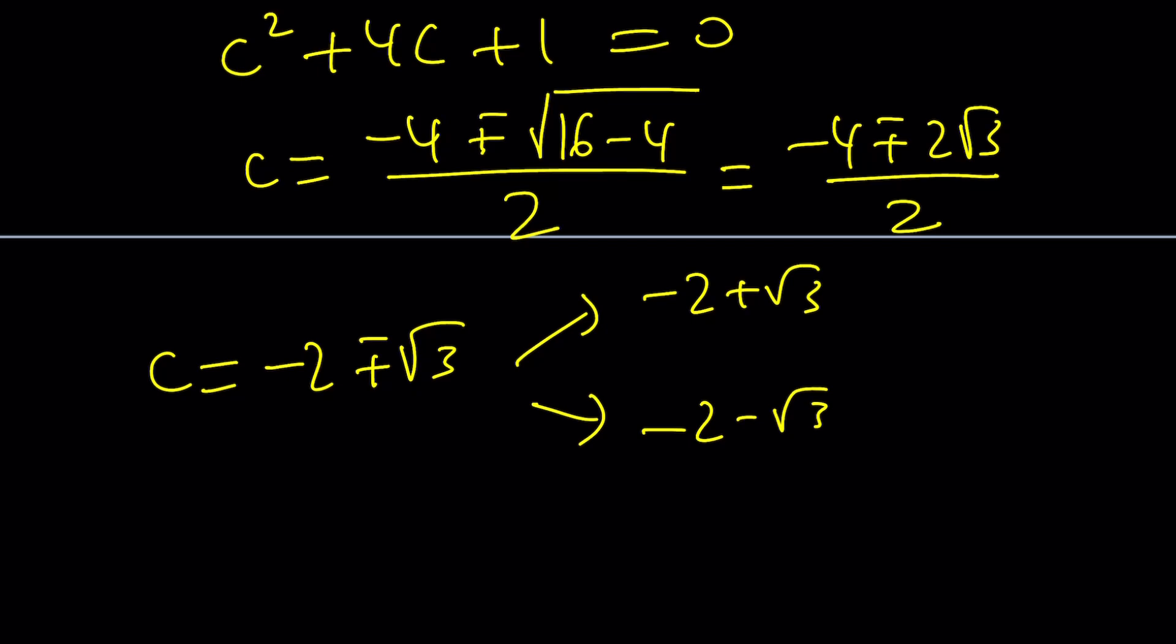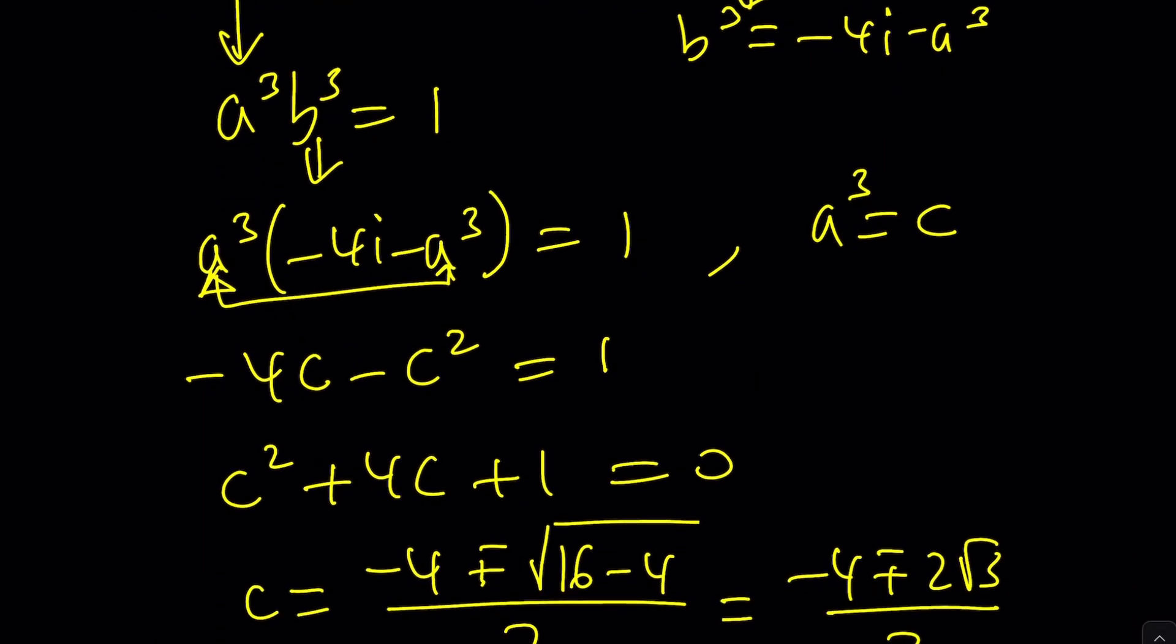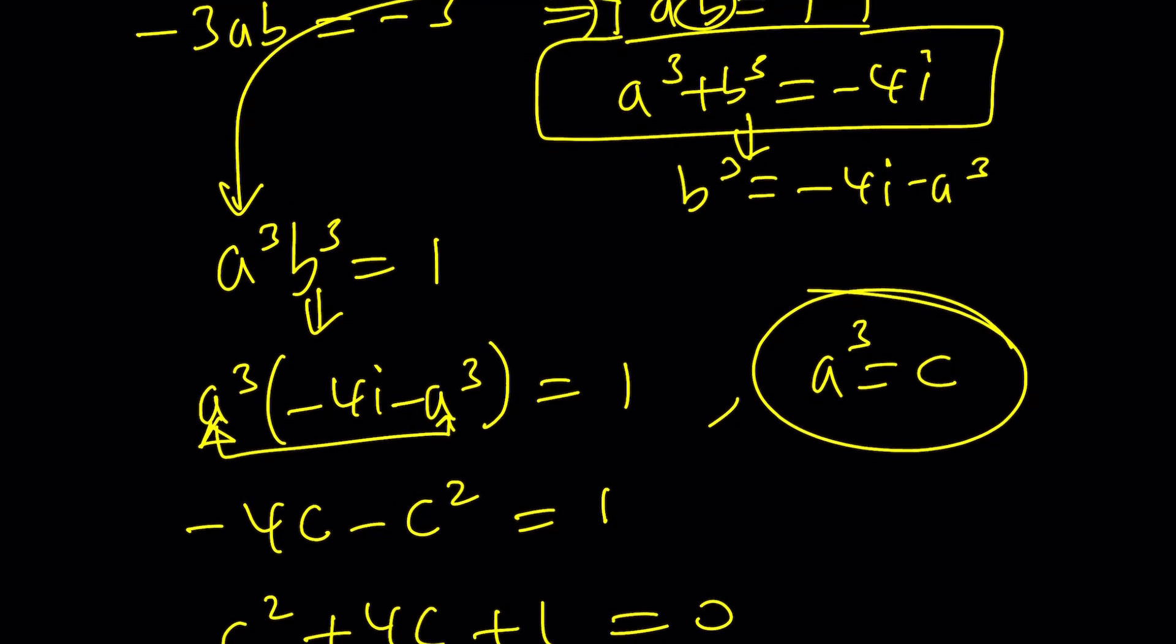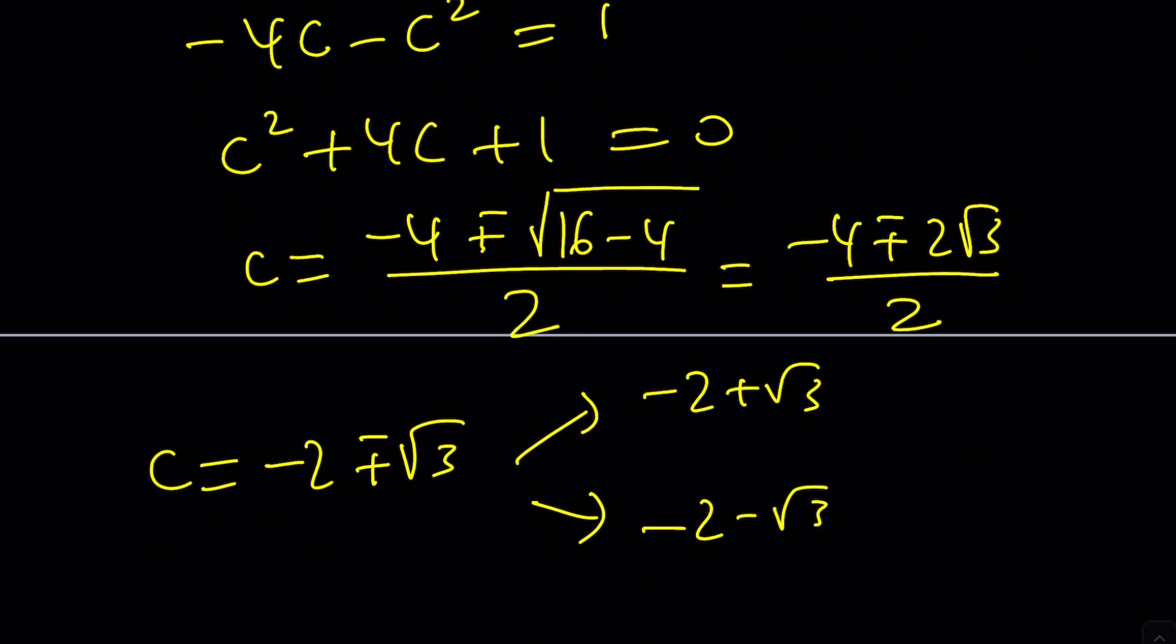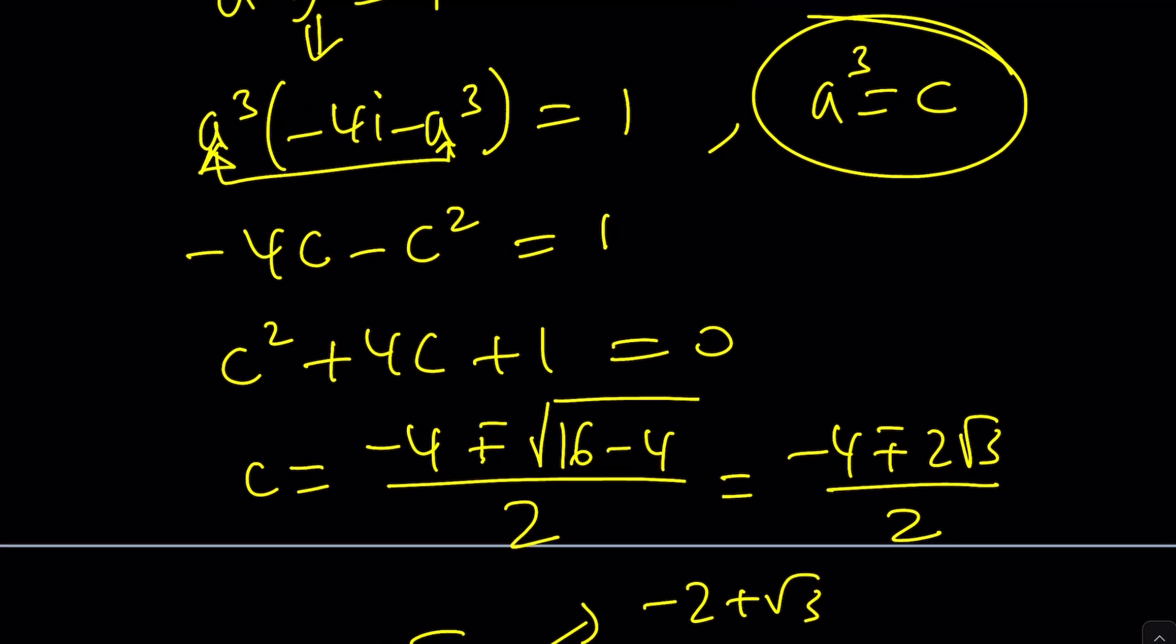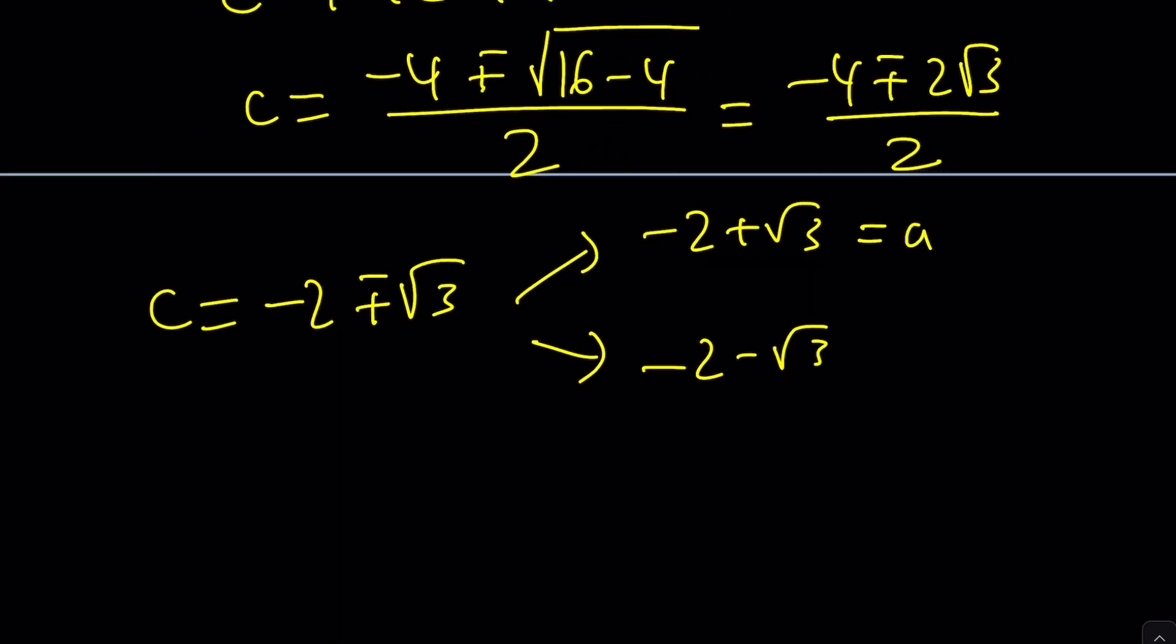Awesome. We got two solutions for c, negative 2 plus root 3, and negative 2 minus root 3. I wanted to separate them because c is a cubed, but a and b can be interchanged. Because they basically have the same role. In other words, one of them can be a cubed. This can be a cubed, and this can be b cubed. Or vice versa. Because z is a plus b. So regardless of which choice you have, a plus b is unchanged or invariant.